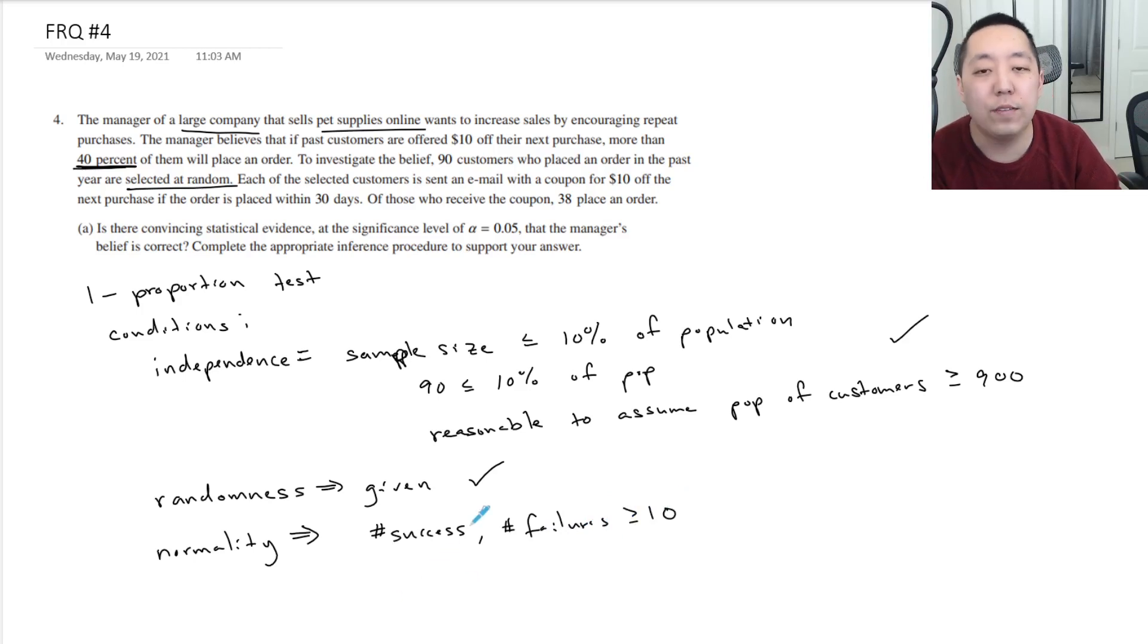Now, normally, that's given as n times p and n times 1 minus p. In this case, the number of successes, 38, is greater than or equal to 10. And then the number of failures, that means the people who didn't take the coupon would have been 52 because the 90 total is greater than or equal to 10. That's also fine.